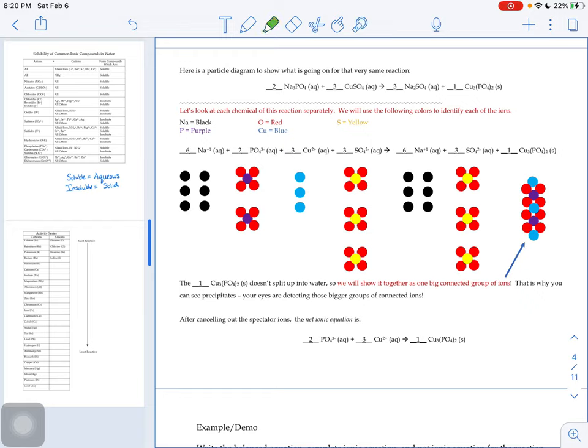Then here's our solid, our precipitate. It's this big giant clump here that's made up of three coppers and two phosphate ions here and here, right? The Cu3(PO4)2 does not split up in water. So we show it as one big connected group of ions, one big connected group of ions. That's why you can see precipitates because your eyes can see those big clumps of connected ions.